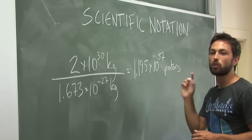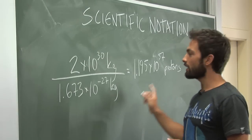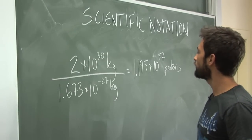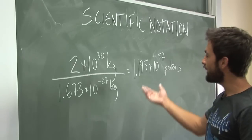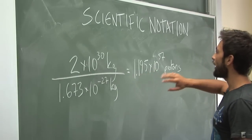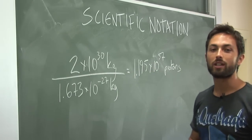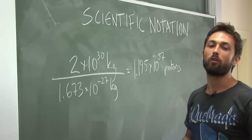If the sun were totally made of protons, that is how many would be there. That's really an unthinkable number. It's basically a 1 followed by 57 zeros, a huge number of protons.